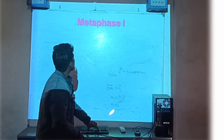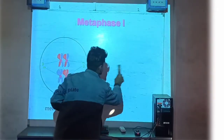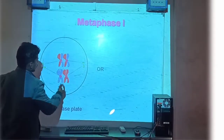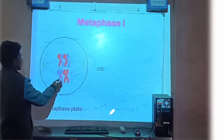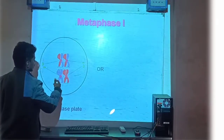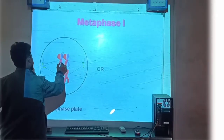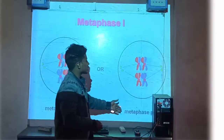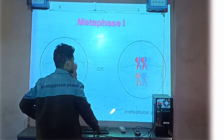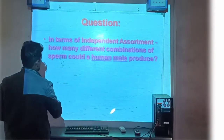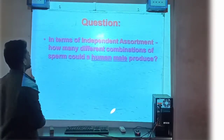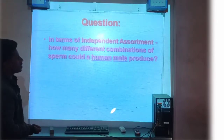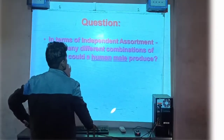Metaphase में और किस तरीके से changes देखने को मिलते हैं — देखें। Centriol दो हिस्सों में बढ़ जाते हैं, paternal chromosome और maternal chromosome का आधा-आधा हिस्सा बदल चुका है। Question पूछा है: in terms of independence assortment, how many different combinations of sperm could a human male produce? उसका answer अब देखा — independence assortment में formula 2^N है।